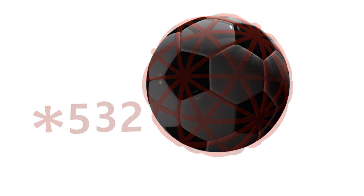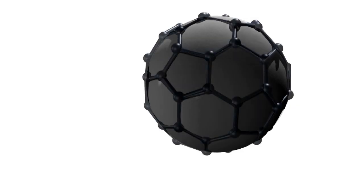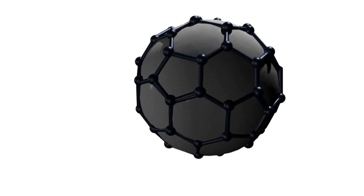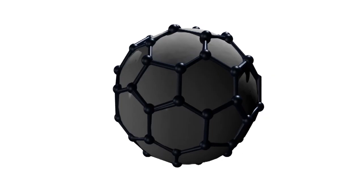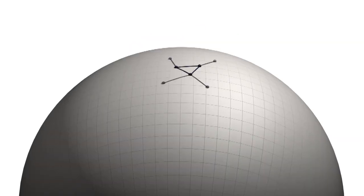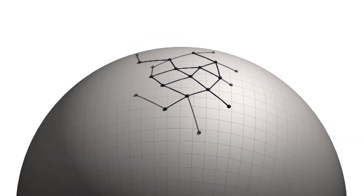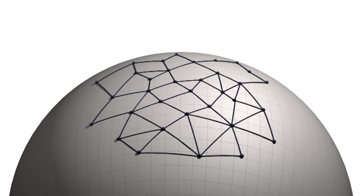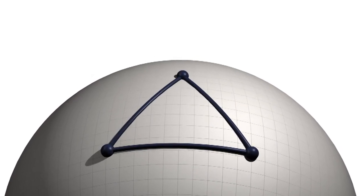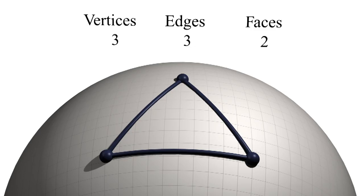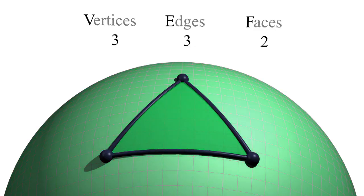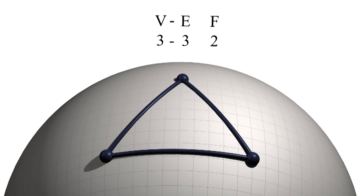In each symmetry, you see some repeated pattern — some repeated shape that is copied many times on a sphere. Now let's think about the properties that a shape on a sphere must have. A shape is made up of vertices, edges, and faces. Think of a simple triangle: it has three vertices, three edges, and two faces. The number of vertices minus edges plus faces is two.